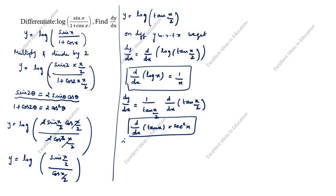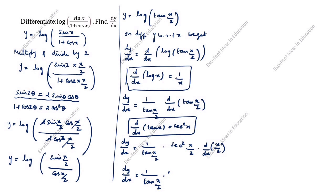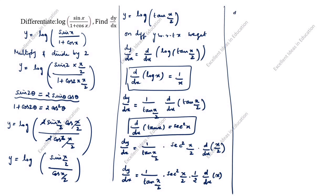The formula of d by dx of tan x is secant square x. So dy by dx is equal to 1 by tan(x by 2) into secant square(x by 2) into 1 by 2, where 1 by 2 comes from differentiating x by 2 with respect to x.